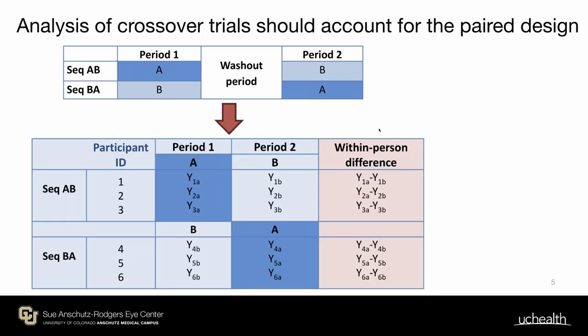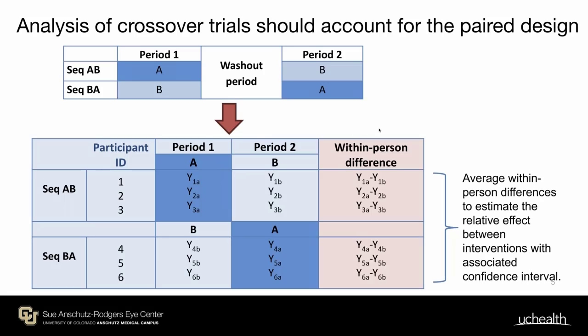In terms of the analysis of crossover trials, it should really account for the paired nature of the design. For example, we usually have two measurements of outcomes at the end of each period for each individual. You then take the within-person differences and average them to estimate the relative effect between interventions with an associated confidence interval. This is one simple way to account for the paired design.